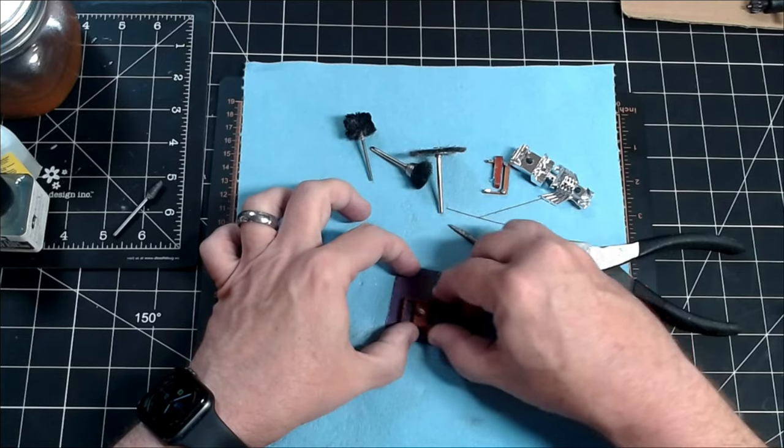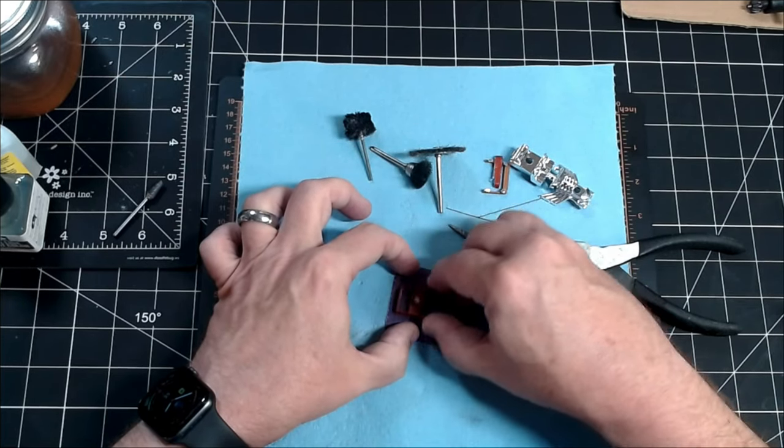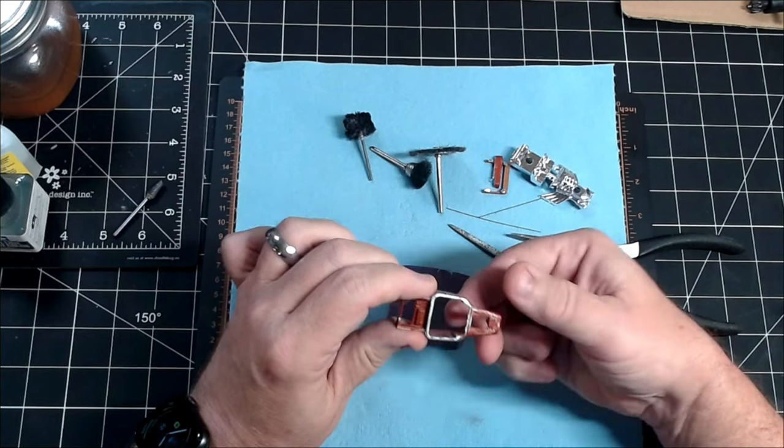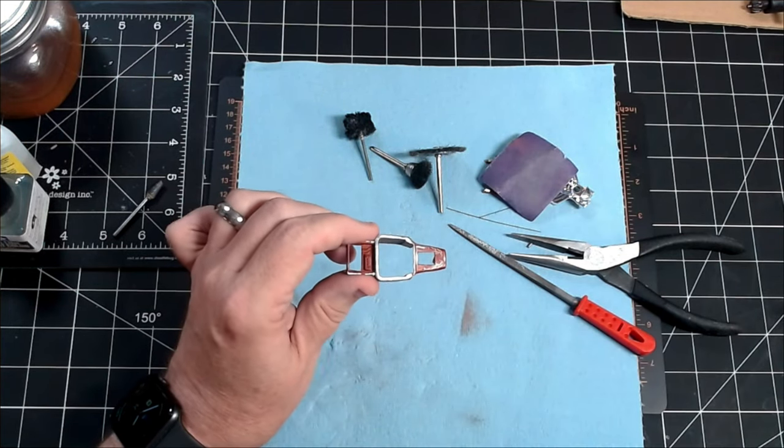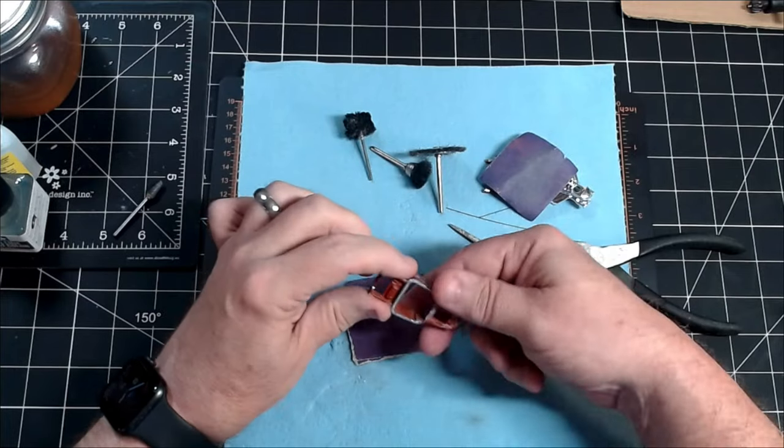So, I used my rotary tool and a jeweler saw, and I cut off the roof. And then, with files and sandpaper, I smoothed out the cut edge, and I came up with something I was kind of feeling pretty good about.